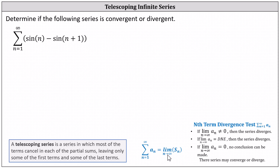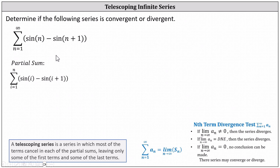Because we want the formula S sub n in terms of n, we'll consider the partial sum, but we'll replace the variable n with i and let n be the upper limit of the index. So we have the sum from i equals 1 to n of a sub i — notice it is the same formula. And now we'll expand.